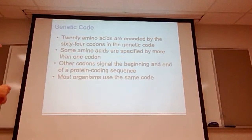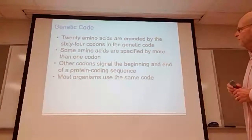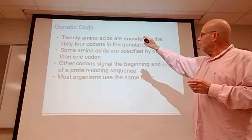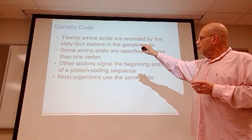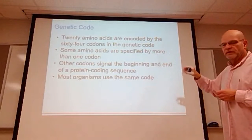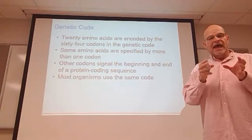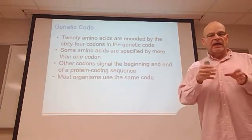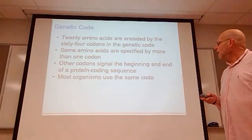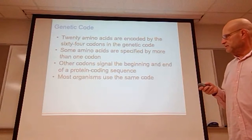There are 20 amino acids encoded by 64 codons in the genetic code. Since there are only 20 amino acids but 64 codons, some amino acids are specified by more than one codon — for example, AAA, AAC, and AAG might all code for the same amino acid. Other codons signal the beginning and end of the protein-coding sequence.